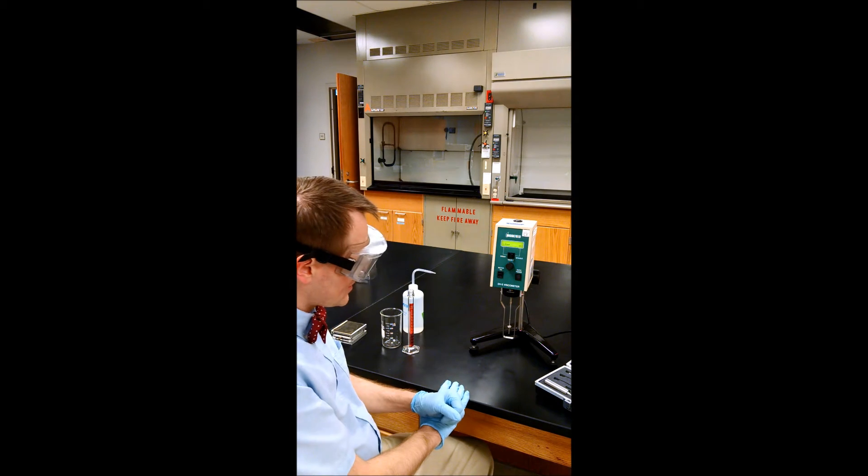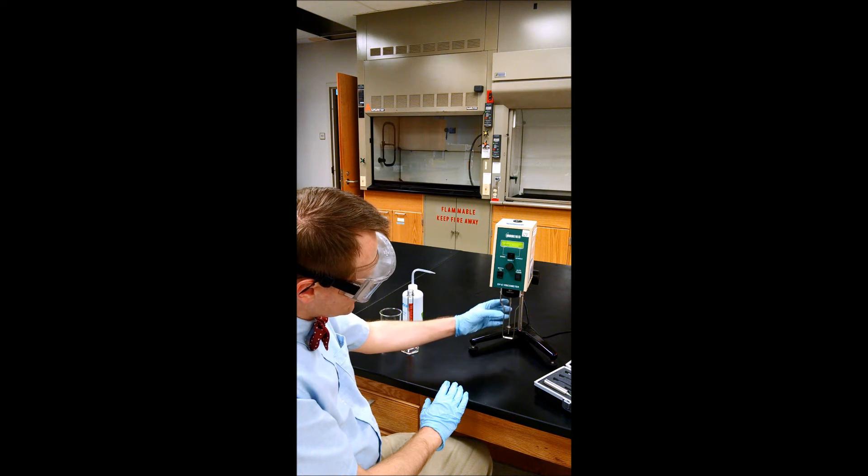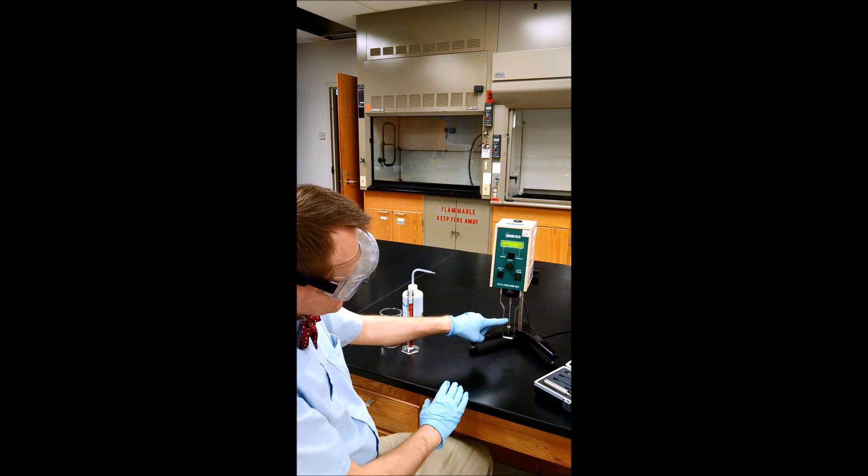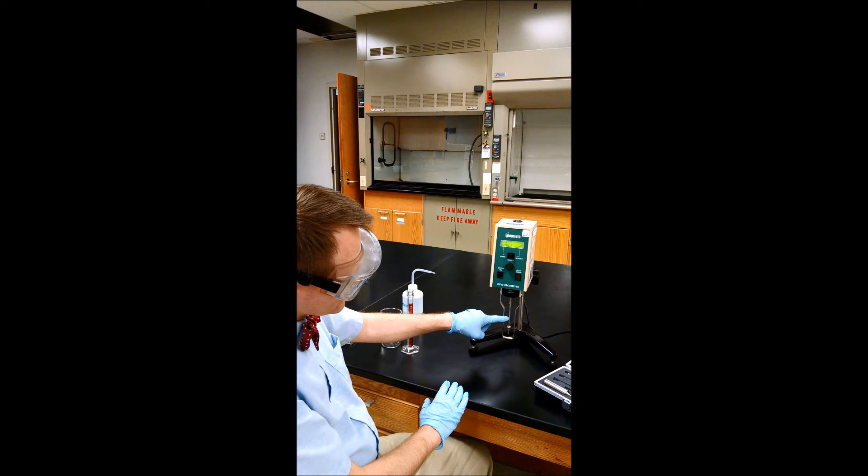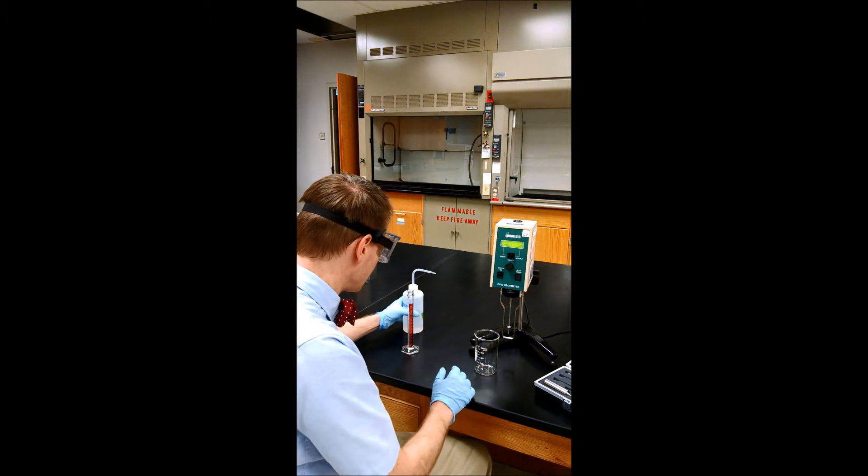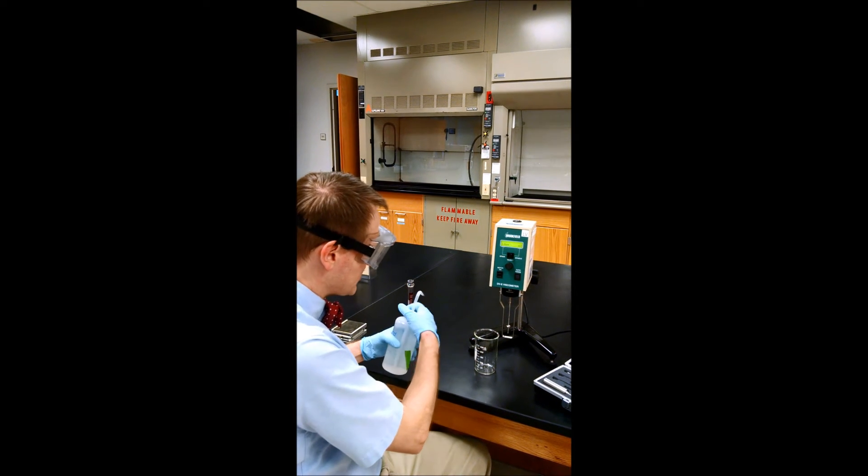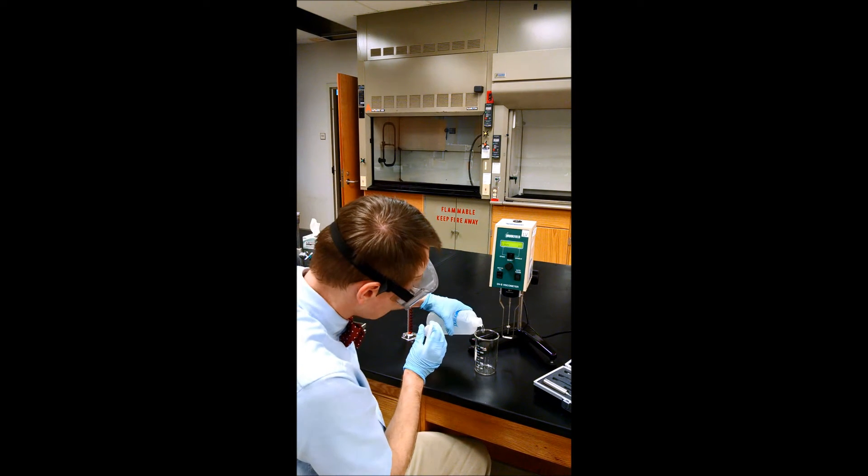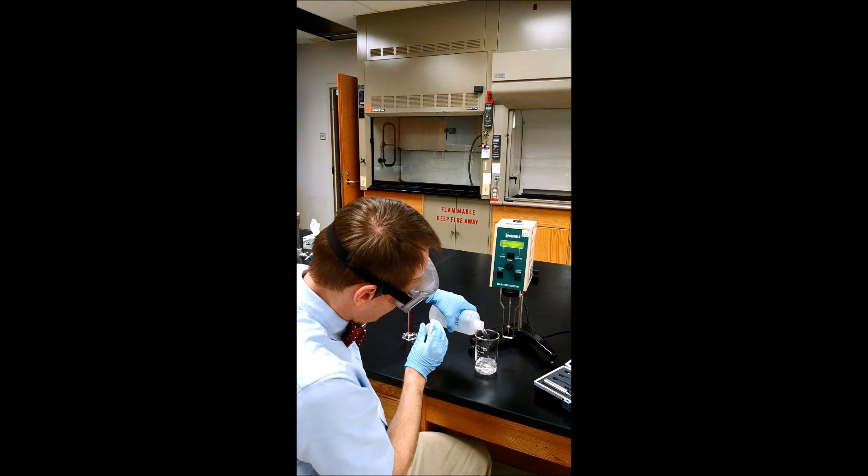Now our spindle is in position and we're going to immerse this into our liquid so that the liquid is up to this level of the groove. We're going to use a tall form beaker and add enough liquid.